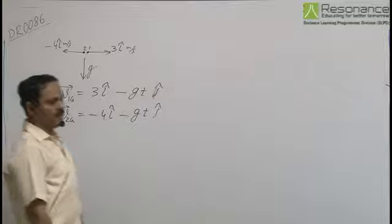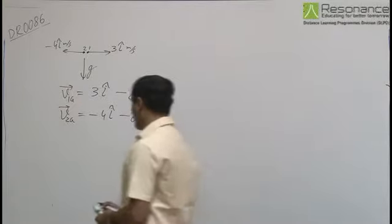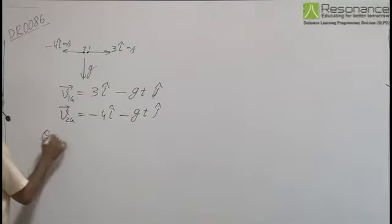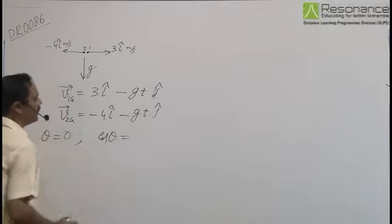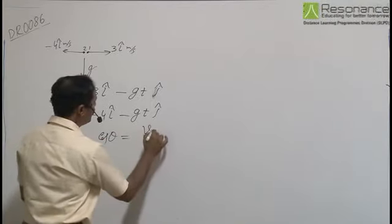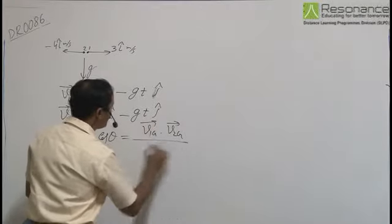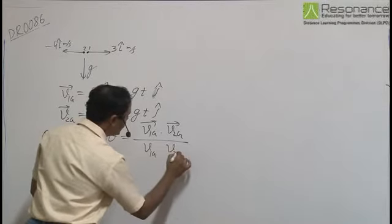It has been asked that velocity vectors become perpendicular. So for perpendicular velocity vectors, the angle cos theta between them has to be 0. So cos theta equals v1g dot v2g by magnitude of 1 into magnitude of 2.